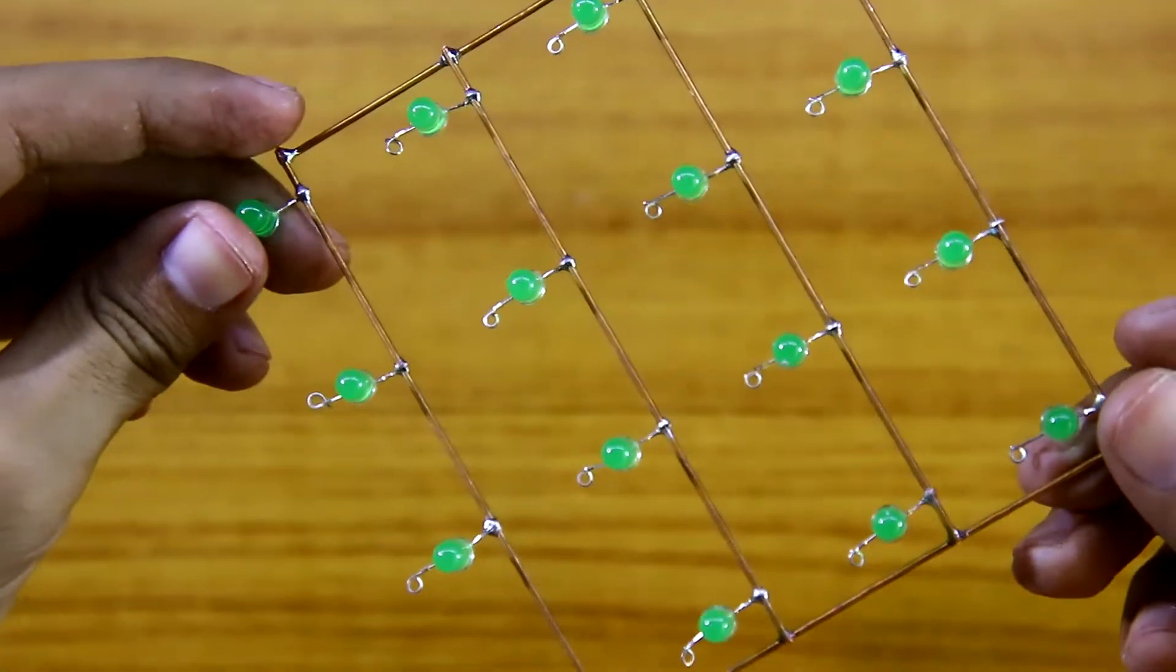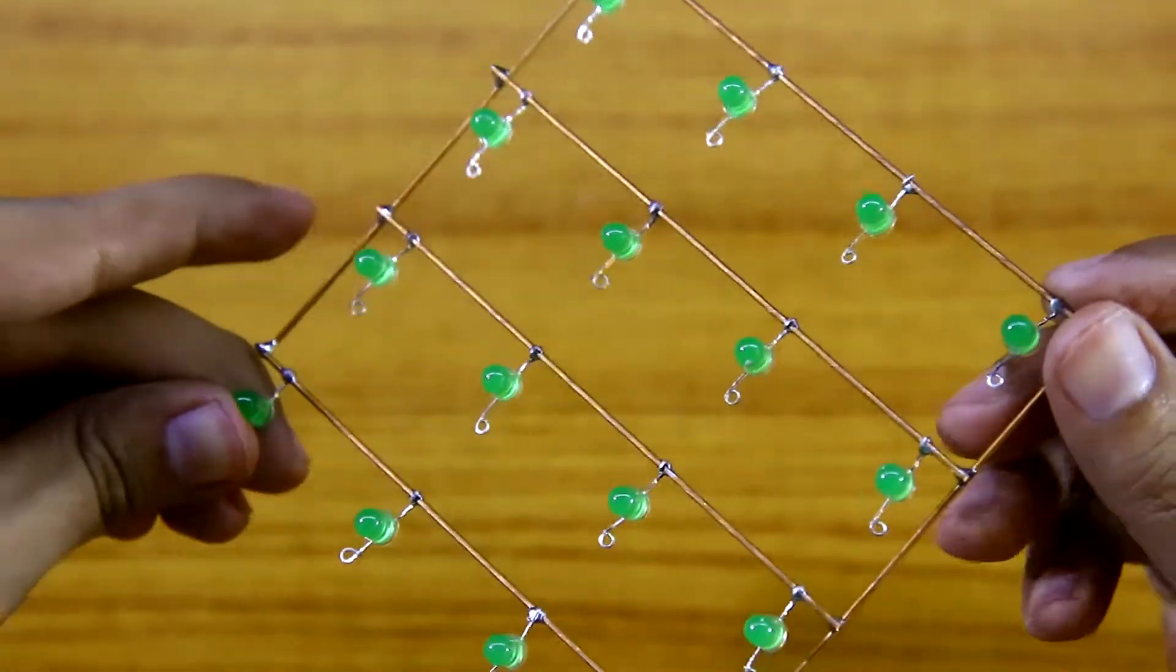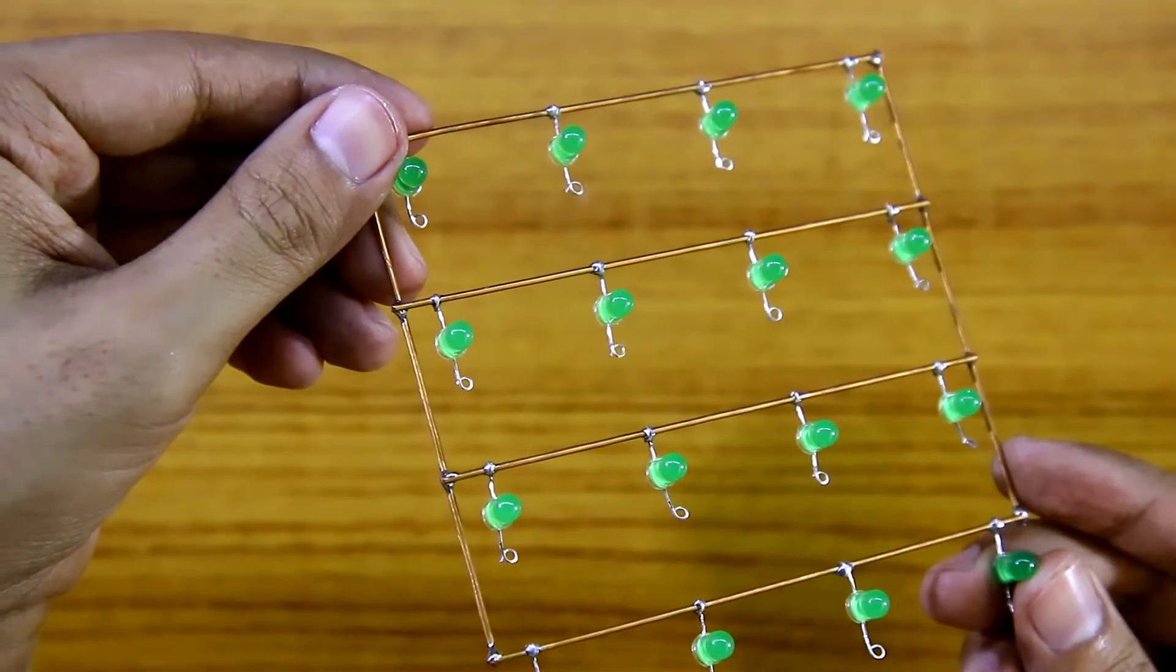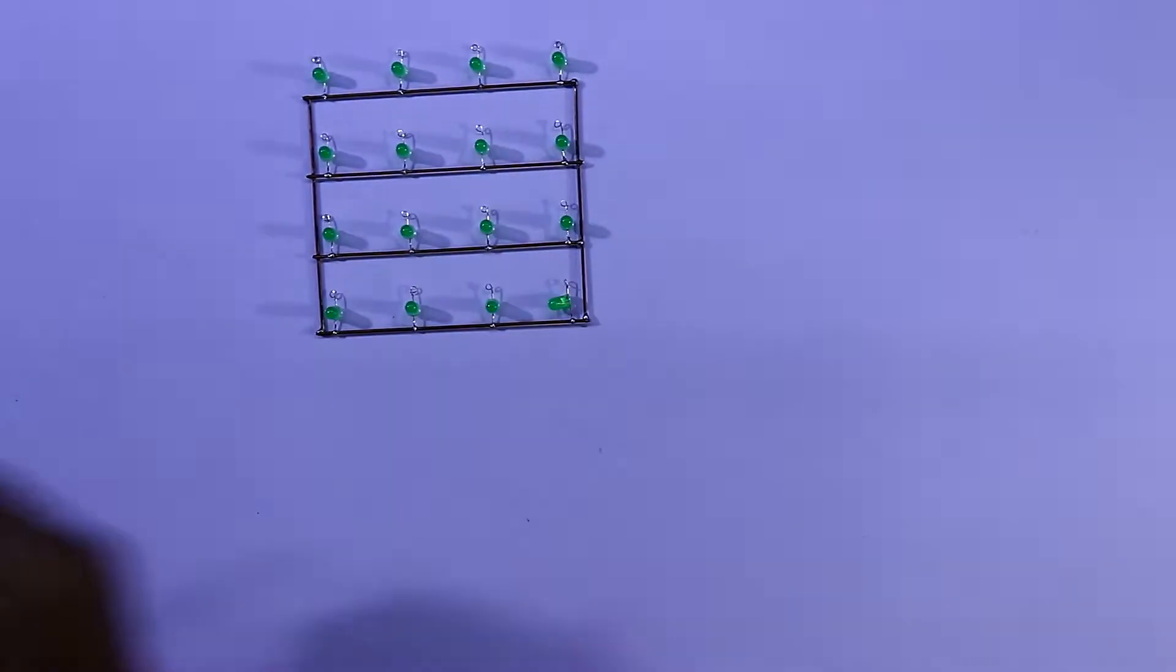This is how we have to make the layers or the level. All these positives are connected. So, this is how you have to make 4 of them.